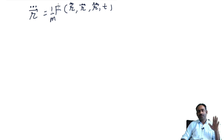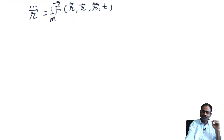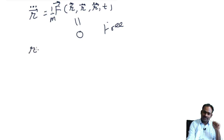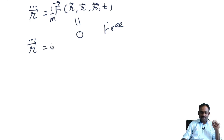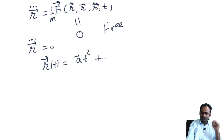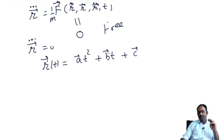Let us see what happens if you try to write down such an equation. Take a particle which is free — no force acting on it — so F equals zero. Then you have R-triple-dot equals zero. If you write down the solution of this equation, it will involve three constants of integration: vector A, vector B, and vector C.